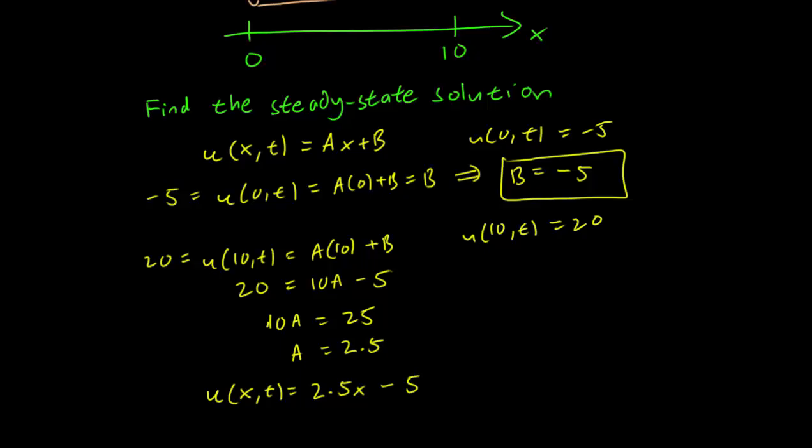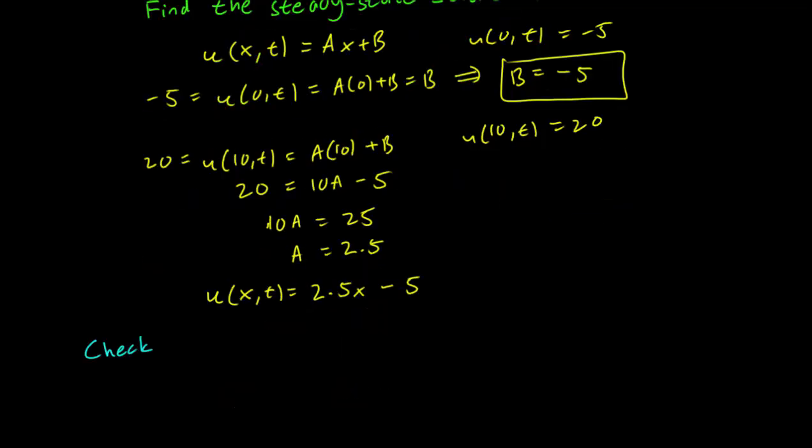Now it's always good to do a little sanity check with this to figure out if we have the right solution. I encourage you to do this for every word problem that you try to solve. So let's first check if we do indeed have a steady state solution. Given the solution, is it true that ∂u/∂t equals 0? And since there aren't any t variables in this function, you can see this is obviously correct that this is a steady state solution.